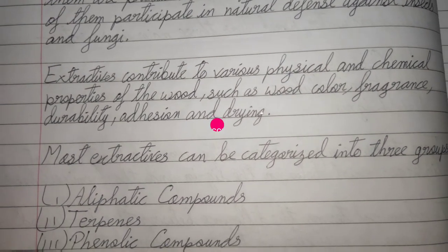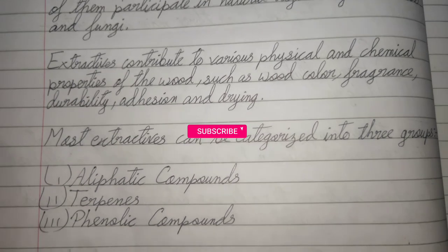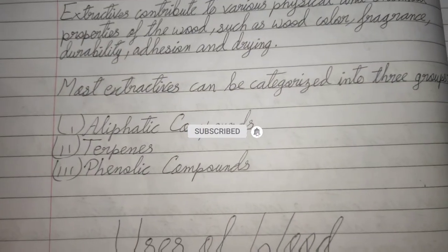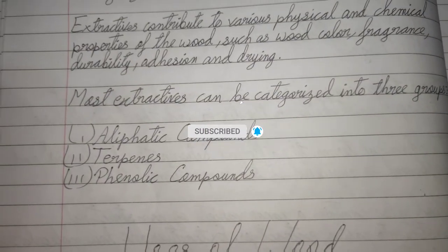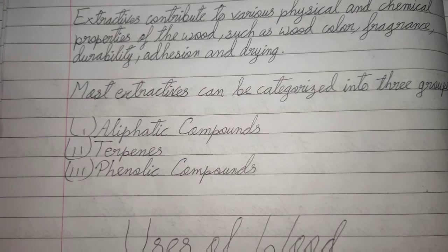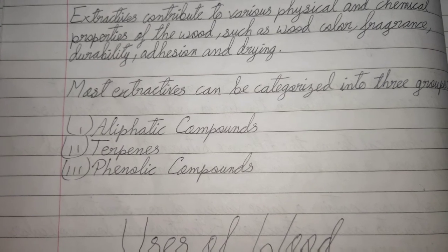Most extractives can be categorized into three groups: aliphatic compounds, terpenes, and phenolic compounds.